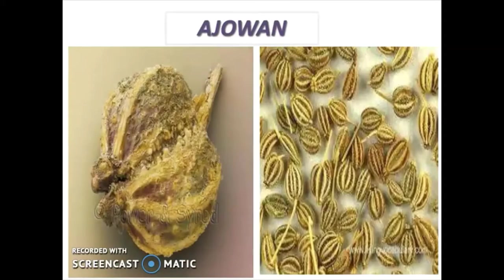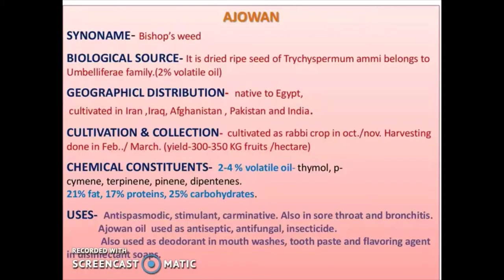First is Ajwan. Synonym: Bishop's Weed. Biological source: it is the dried ripe seed of Trachyspermum ammi, belonging to the family Umbelliferae. It contains 2% volatile oil. Geographical source: native to Egypt, cultivated in Iran, Iraq, Afghanistan, Pakistan, and India.